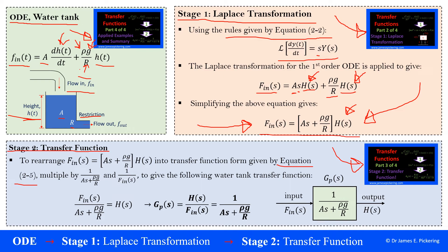we can just rearrange this into the form that we want, so output over input. In this case, the output is the height of the tank, so H(s), and the input is just this F subscript in of s. So first of all, if we multiply by 1 over As plus ρg over R, so multiply this equation here by that, what we'll end up is this equation here, so end up with flow in over that lump term that I just said, is equal to H(s).